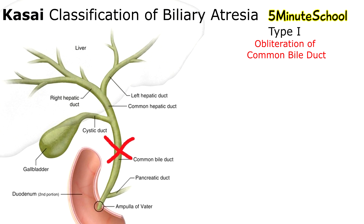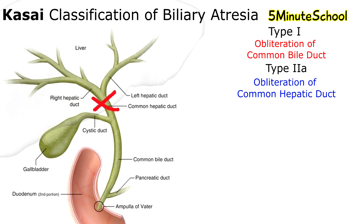I'm going to highlight that on this image. So type 1 is the obliteration of the common bile duct. Moving on to type 2A: we have the obliteration of the common hepatic duct. I'll write these down on the side as well — type 2A, obliteration of the common hepatic duct.